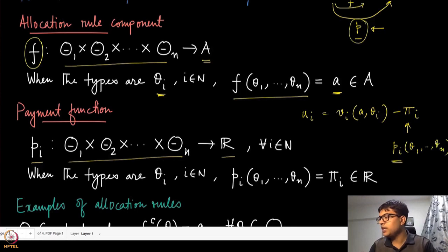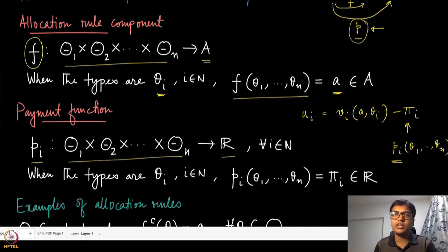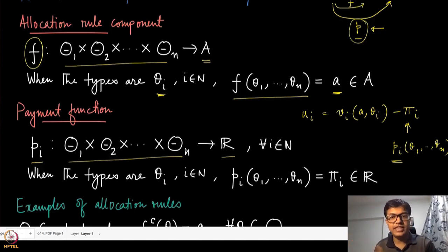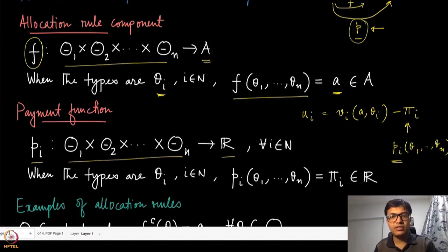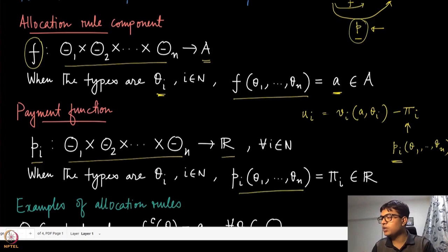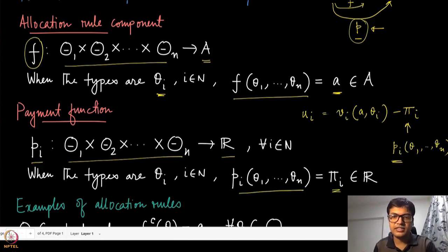If P_i is positive, the agent is asked to pay — you purchase an object and are asked to pay a certain amount. But if P_i is negative, that means the agent is getting paid: not only is it allocated something, it also receives some compensation money. Both setups are admissible under this model. P_i(theta_1, ..., theta_n) is one payment real number living in R.